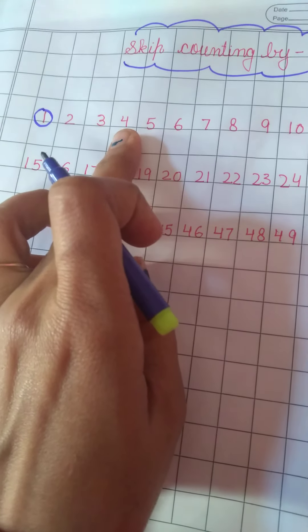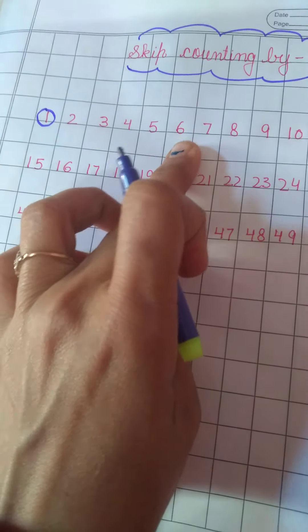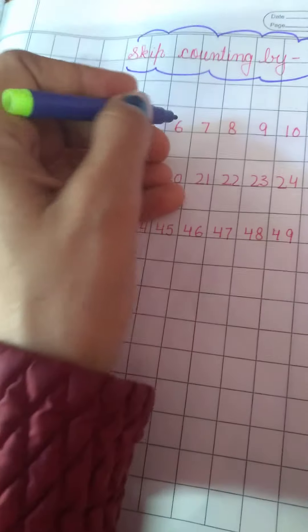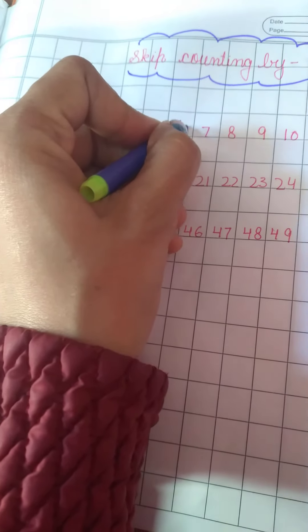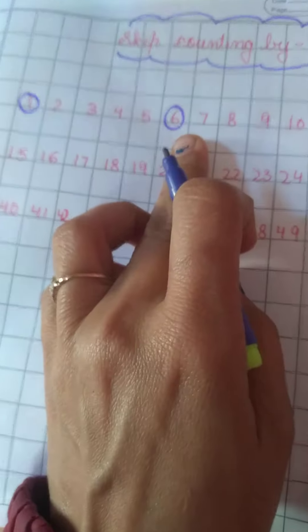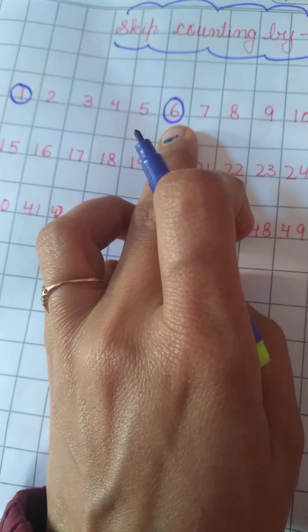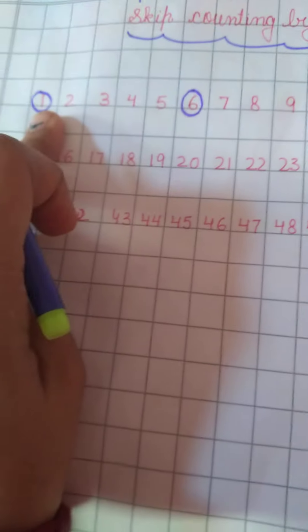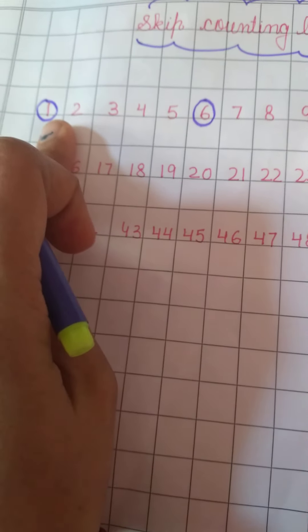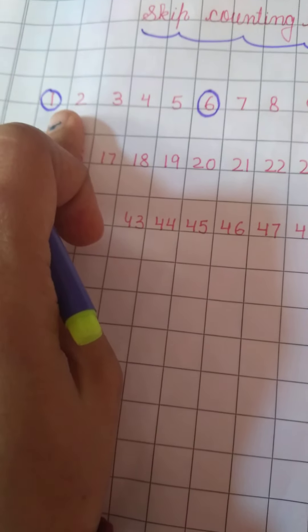1, 2, 3, 4, 5. This is the fifth number. So you will jump here. Aapko kahaan jump karna hai? Aapko sixth number pe. Because you will start counting after 1.